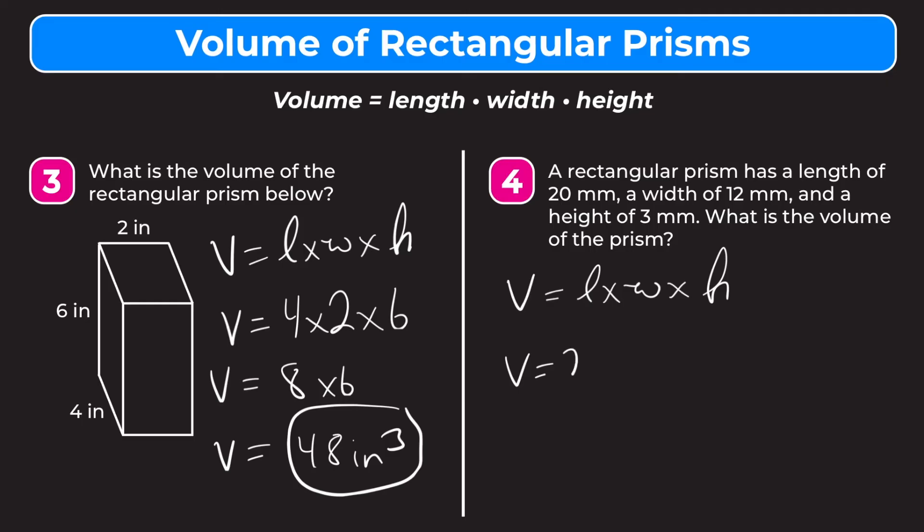The length, the problem tells us, is 20. The width is 12. And the height is 3. So now if we multiply this out, 20 times 12 is 240 times 3. And that is going to give us 720. And our unit of measure is millimeters cubed, or 720 cubic millimeters.